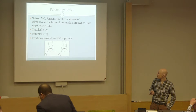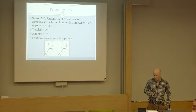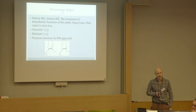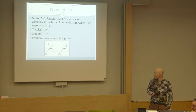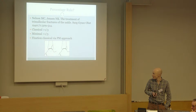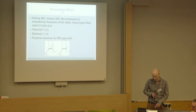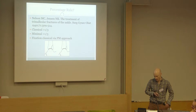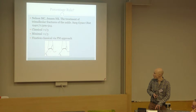Jumping forward to the 1940s, Nelson and Jensen divided posterior malleolus fractures into 'classical' — more than a third of the joint surface — or 'minimal' — less than a third — and they advocated fixation of those classical fragments by a posteromedial approach. That, I think, is the origin of the rule of the third.